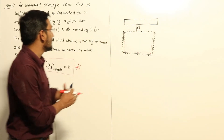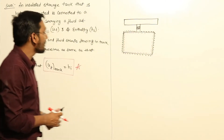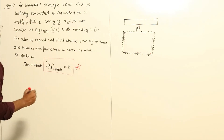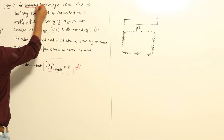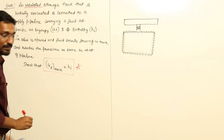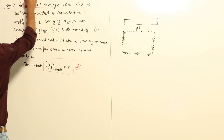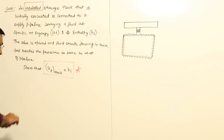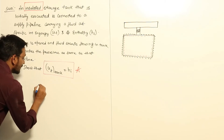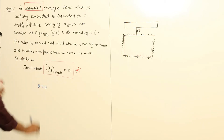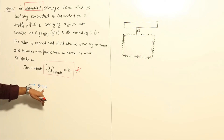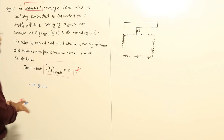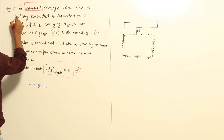Let us mark the important points from the question and see how to approach this numerical. The first important point is that the tank is an insulated storage tank. If the tank is insulated, that means there is no heat transfer — this is the first hint from the question.